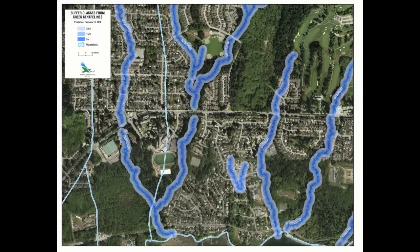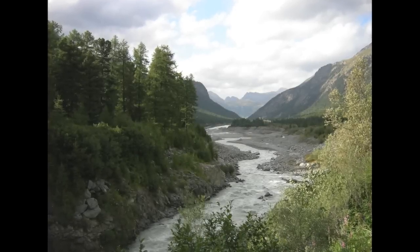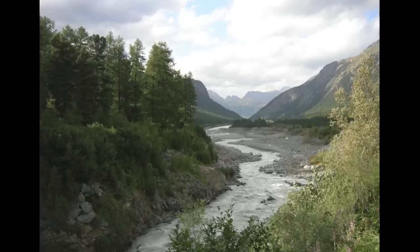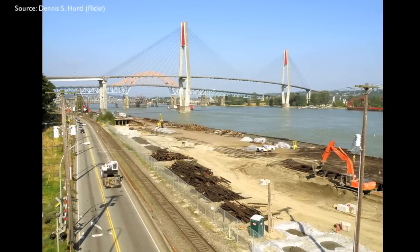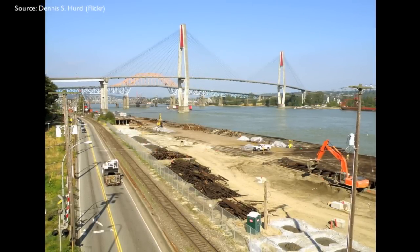Current riparian area regulations in the lower mainland of BC require a 30-meter-wide vegetated buffer zone on both sides of a stream corridor, containing only developments that will not result in harmful alteration of fish habitat. However, research has shown that aquatic ecosystem protection is enhanced with a 60-to-100-meter buffer strip. Competing land uses on a limited land area make these wider buffer zones difficult to implement in an urban environment.